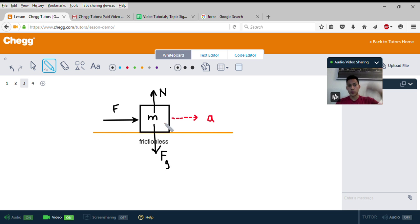Because this box isn't accelerating up or down, we know that the normal force and the force due to gravity will cancel each other out. This means the only force left is this horizontal force F, and that causes it to accelerate horizontally.